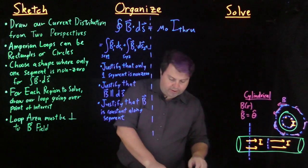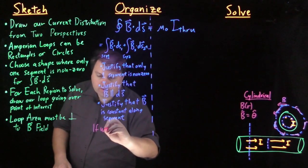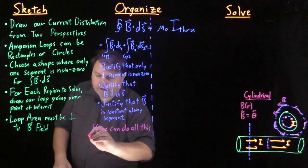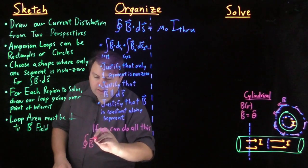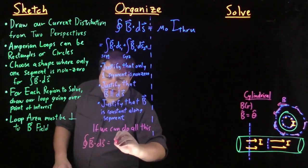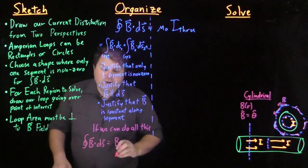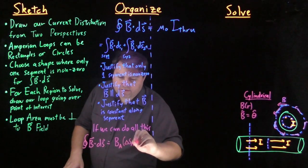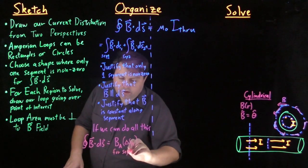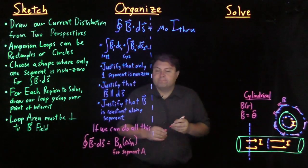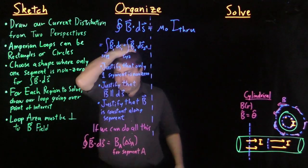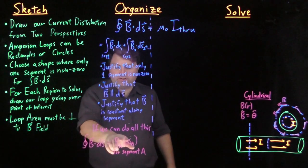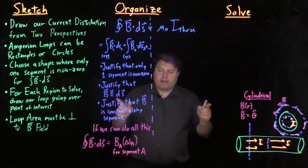So if we can do all this, then our closed integral of B dot ds is equal to the B for segment A times delta S for segment A. And we no longer have to do the integral because it was constant, we could pull it out, and then the integral of ds is just the length of that segment.